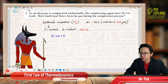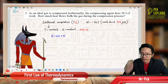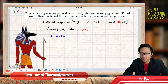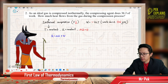Now the second tutorial question. As an ideal gas is compressed isothermally, the compressing agent does 36 joule of work. How much heat flows from the gas during the compressing process?